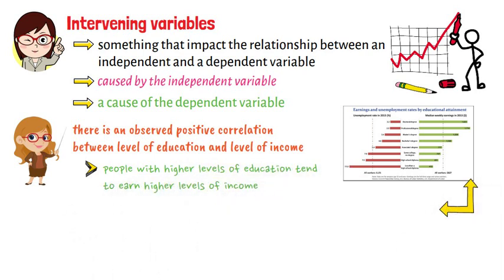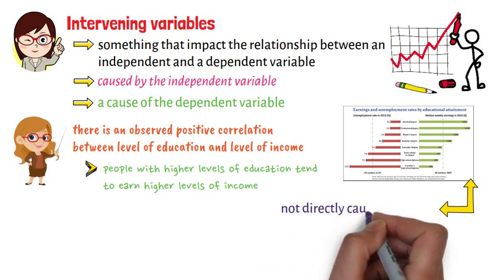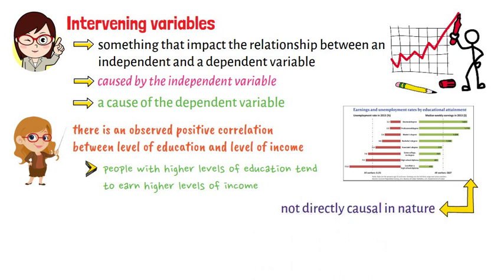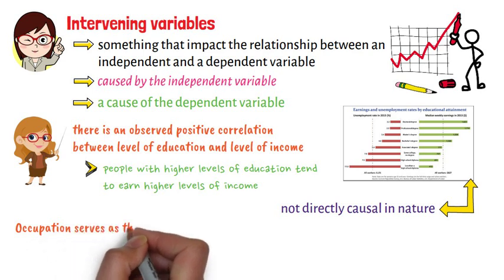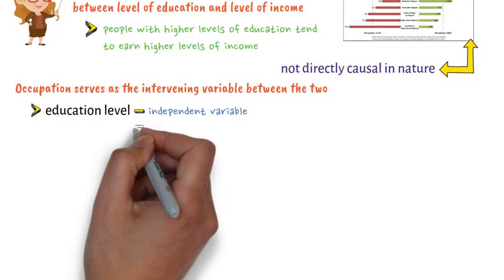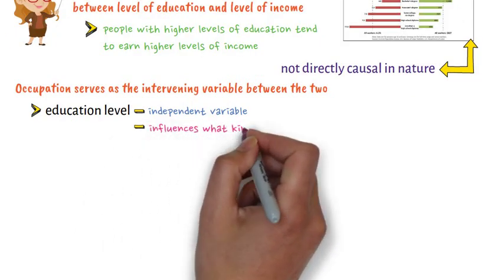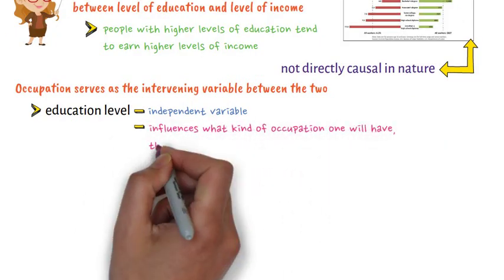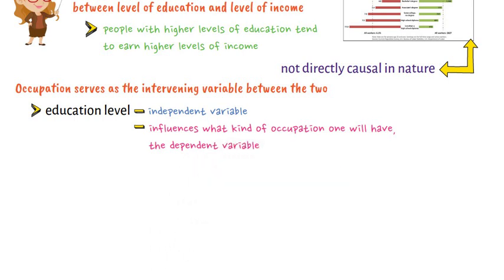This observable trend, however, is not directly causal in nature. Occupation serves as the intervening variable between the two, since education level, the independent variable, influences what kind of occupation one will have, the dependent variable, and therefore how much money one will earn.